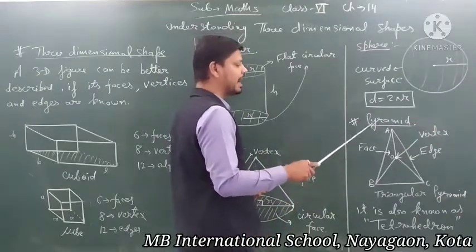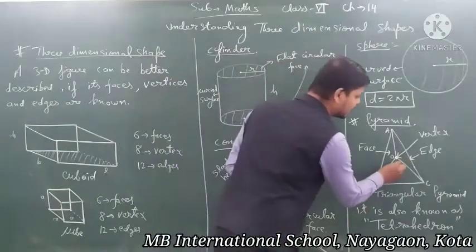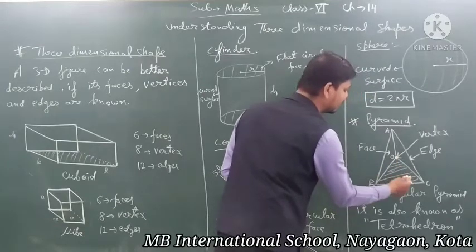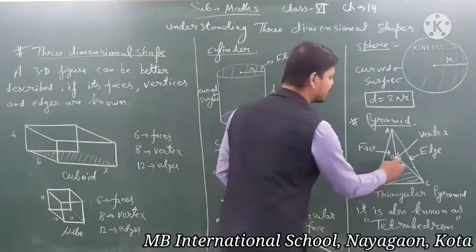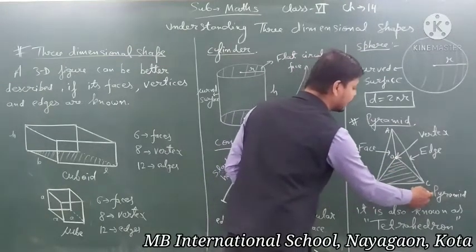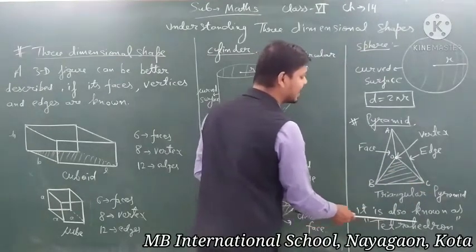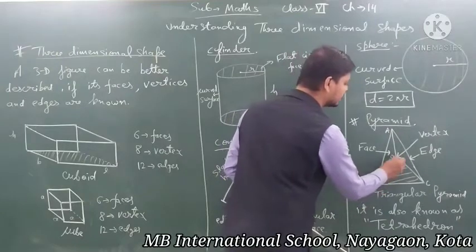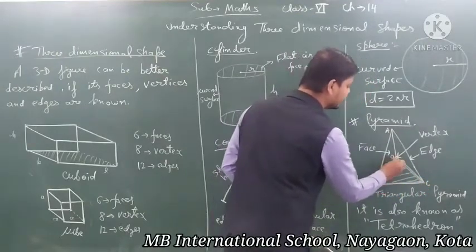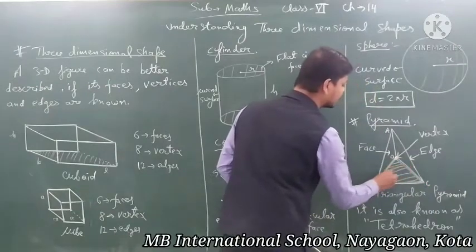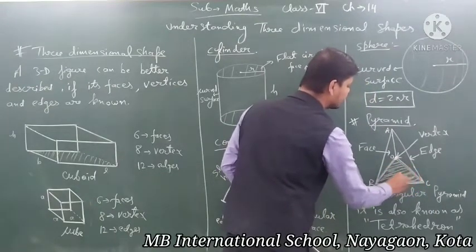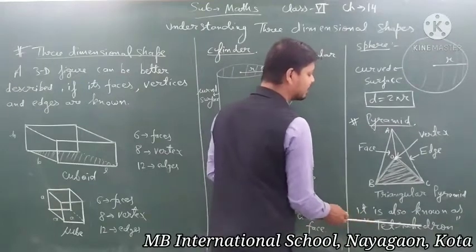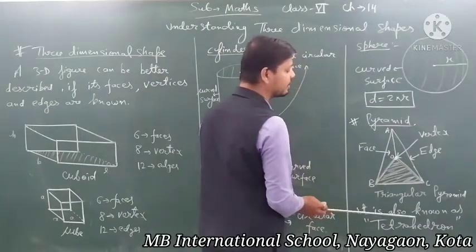After that, a pyramid. A pyramid is named based on its base. If the base is a triangle, it is called a triangular pyramid. A triangular pyramid is also called a tetrahedron. If you have to draw a tetrahedron, it means you have to draw a triangular pyramid.